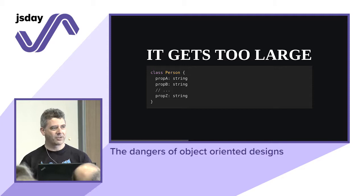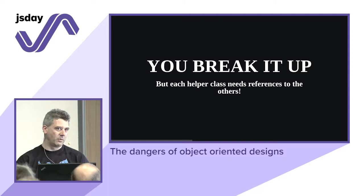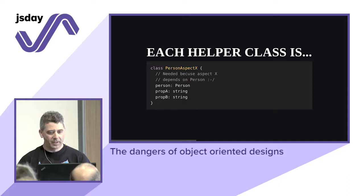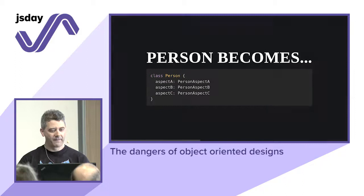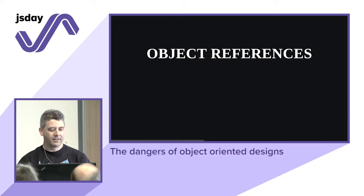Then it gets large — you add functionality, properties from A to Z. You decide to split it. You break it up, but the problem is that it was actually one piece of functionality. Each helper class needs references to the other pieces because the logical dependency is there. Each helper class has a reference back to Person, and Person has references to all those classes — the system is a monolith anyway.